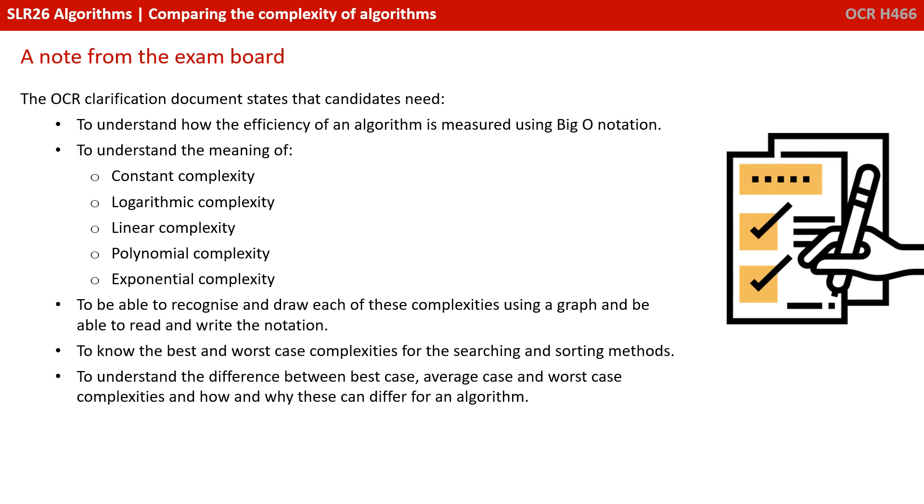We spent the last two videos talking about big O notation, and it's important to understand exactly what the exam would want you to know about. The OCR clarification document says you need to understand how the efficiency of an algorithm is measured using big O. Understand the meaning of constant, logarithmic, linear, polynomial, and exponential complexity. Be able to recognize and draw each of these using a graph, and be able to read and write their notation, for example, O(n). To know the best and worst case complexities for the searching and sorting methods. And to understand the difference between best, average, and worst case complexities, and how and why these can differ for any given algorithm.